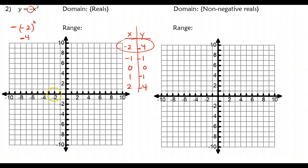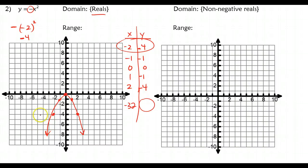So I'm going to plot those points: negative 2 negative 4, negative 1 negative 1, 0 comma 0, 1 negative 1, and 2 negative 4. My domain here was all reals, so I can plug in any point I want for x. Looking at the range, we have a max height of 0, so the range is y less than or equal to 0.